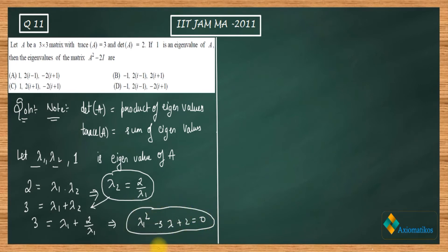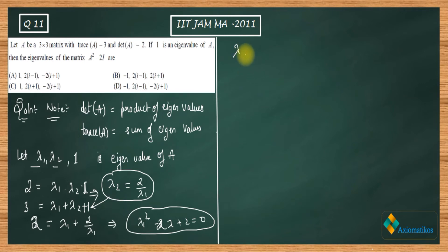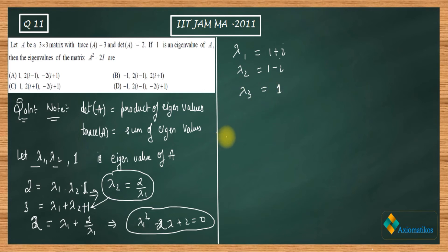There is a correction here — since there are three eigenvalues and the trace must account for all of them including the known eigenvalue 1, the correct equation becomes lambda 1 squared minus 2 lambda plus 2 equals 0. Solving this quadratic gives lambda 1 equals 1 plus i and lambda 2 equals 1 minus i. So the three eigenvalues of A are 1 plus i, 1 minus i, and 1.